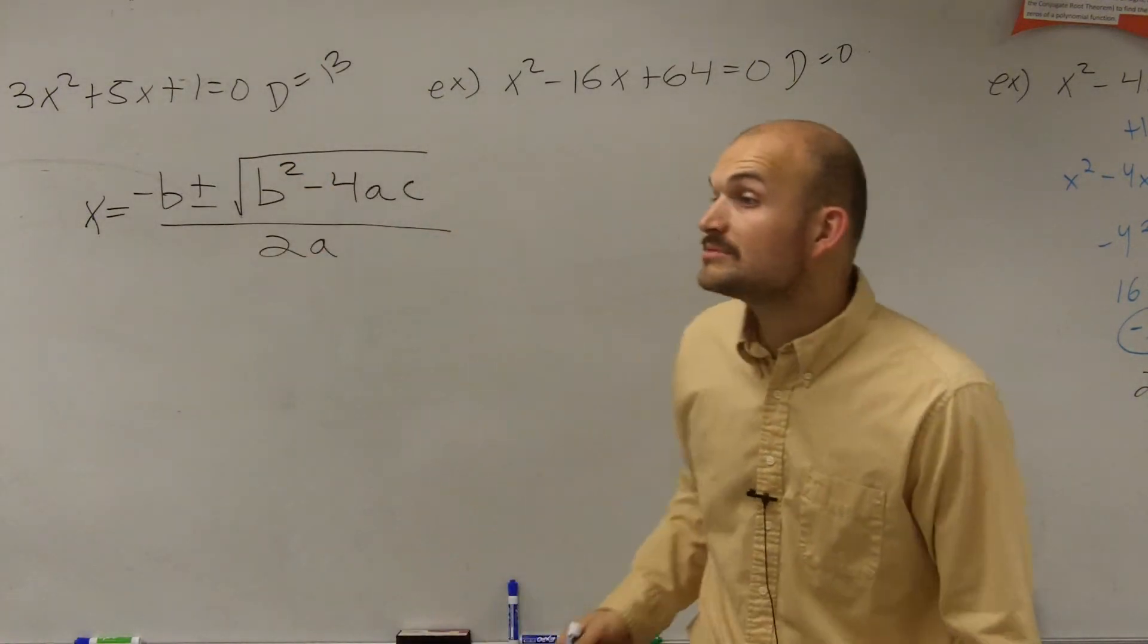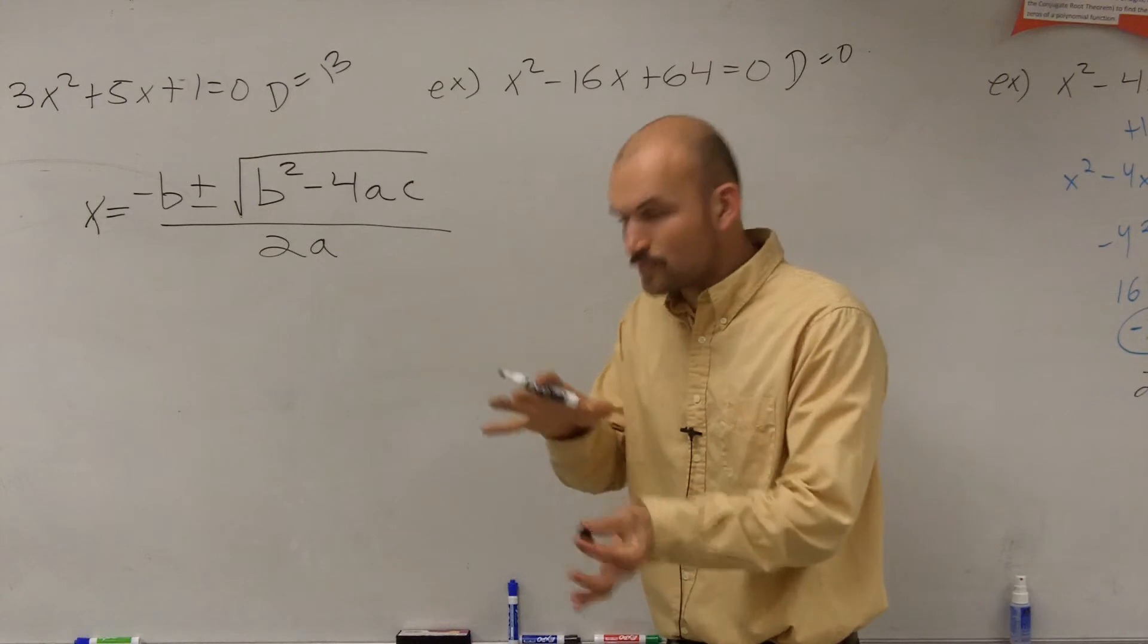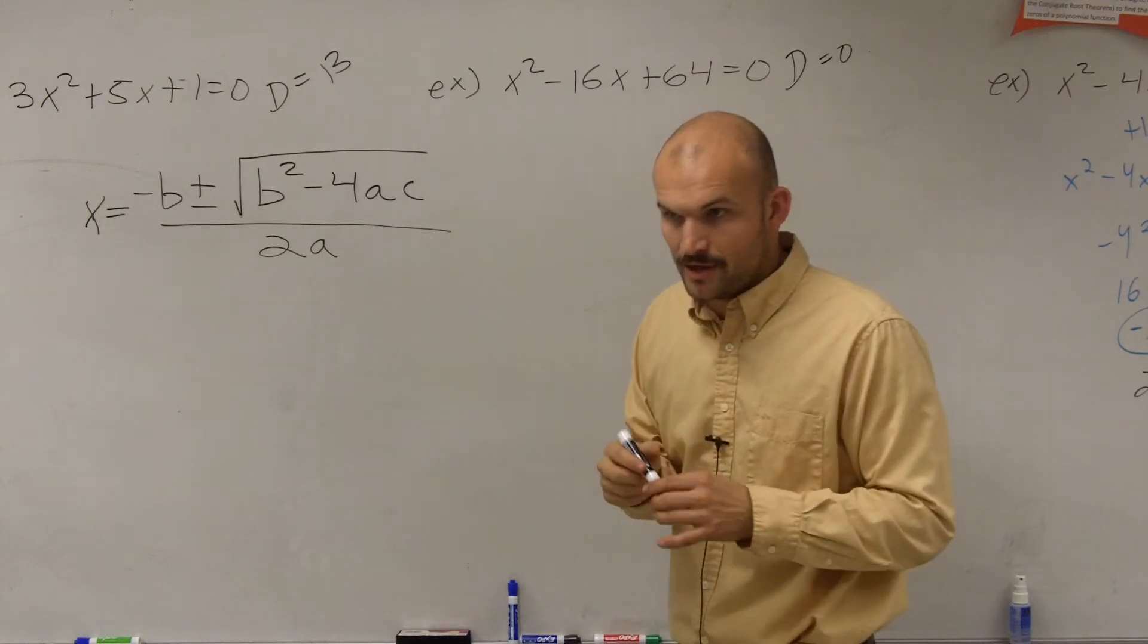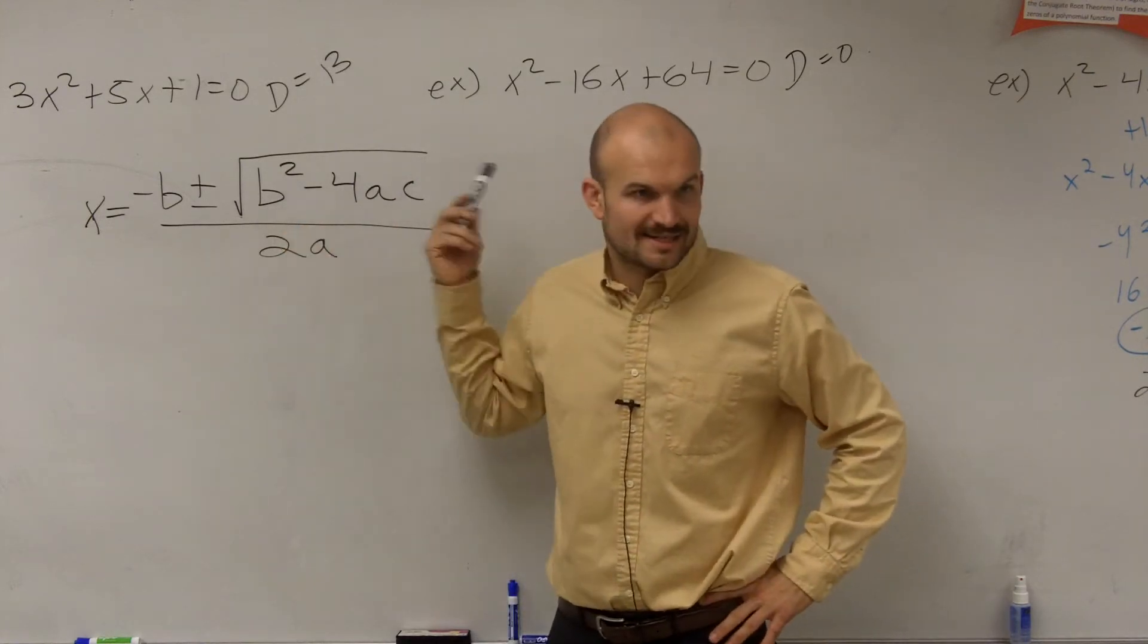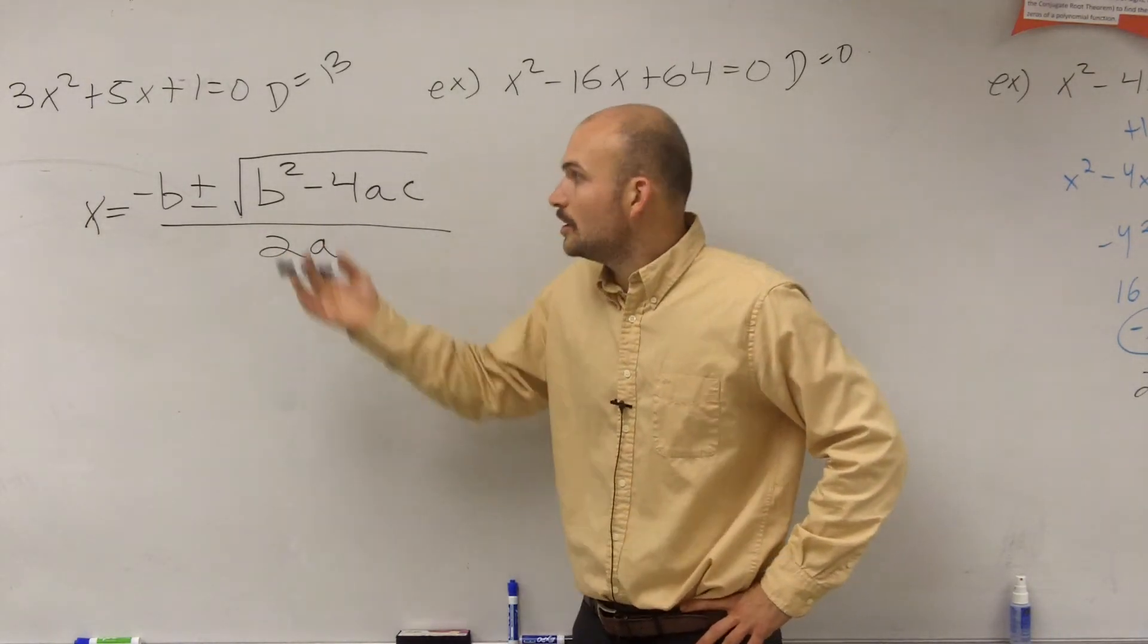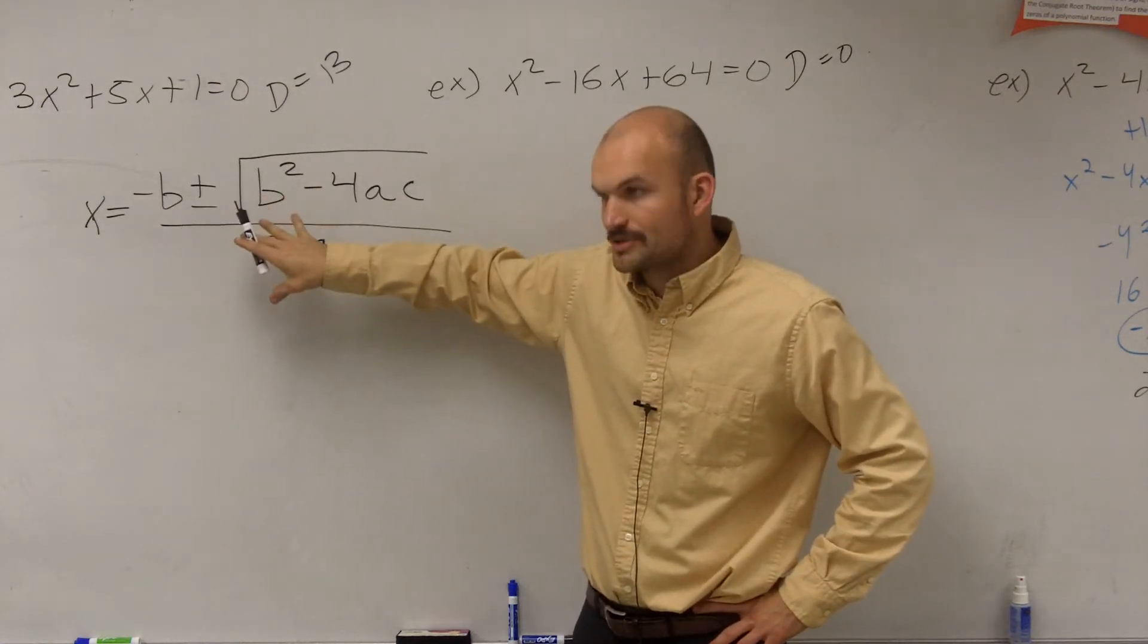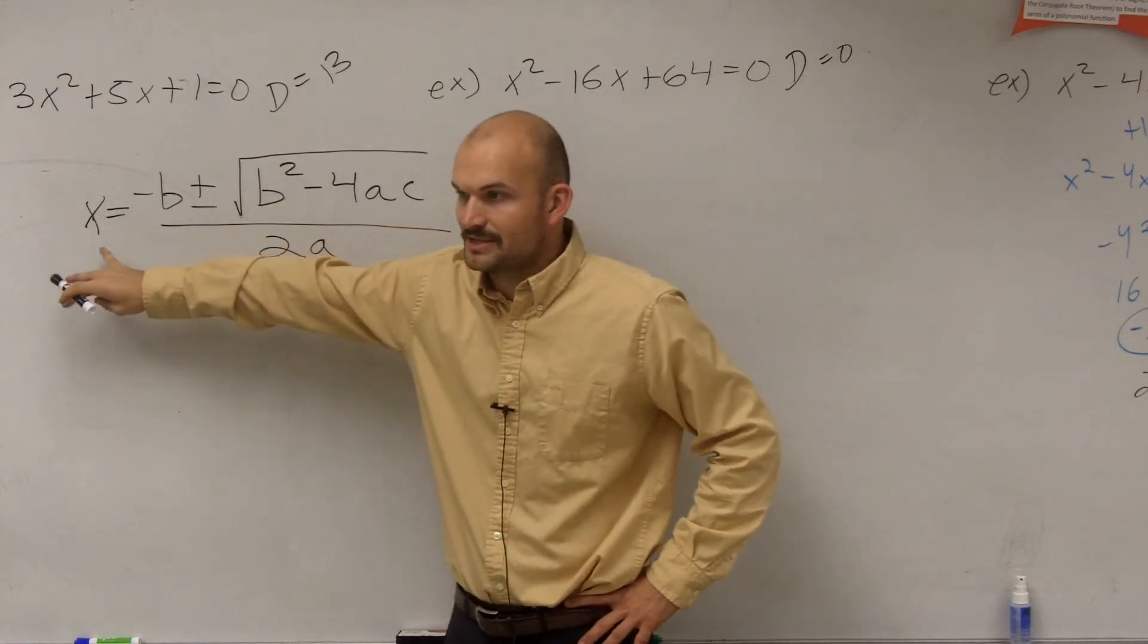That's going to be your quadratic formula. I'm not going to prove where the quadratic formula comes from. But what I want to tell you is a couple things. We found out the discriminant tells us a lot about our zeros, right? If you can't factor it, if you don't want to do completing the square, you can also find your solutions by using the quadratic formula. This is another way to find the values of x.